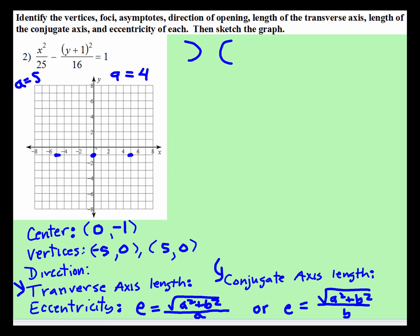And for the vertices in the other direction, 1, 2, 3, 4, 1, 2, 3, 4, I'm going to call those the co-vertices. We're at 0, 3, and we're at 0, negative 5.